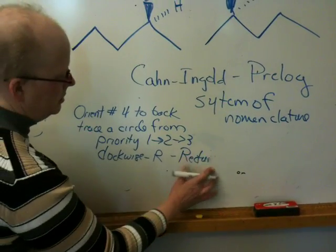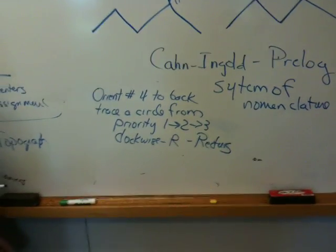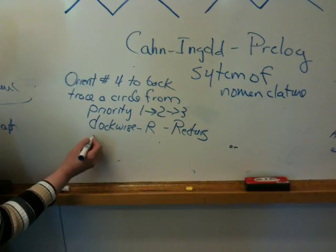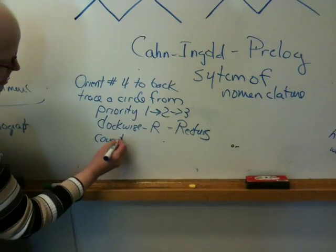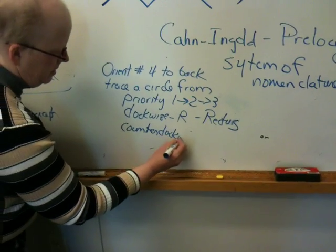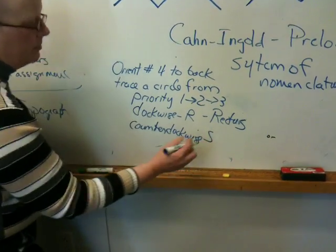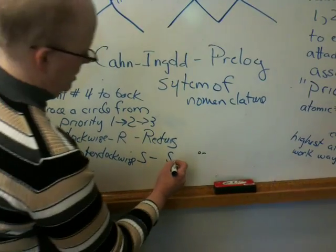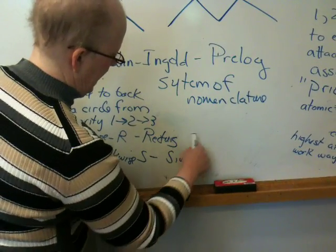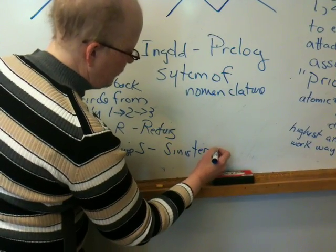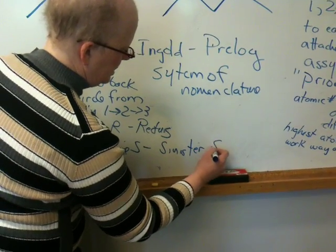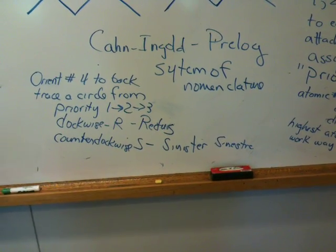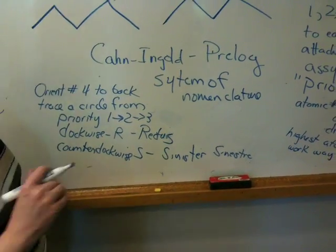Rectus — is that Latin for right, to the right? And then if it's counterclockwise, it is S, which stands for sinister or sinistra, I believe, and that means to the left. My son is a Latin scholar, so I'm asking him. I've heard people say sinistra; that might be another version of it. But I always said sinister, because you think sinister, evil, left-handed. No, I'm just joking.